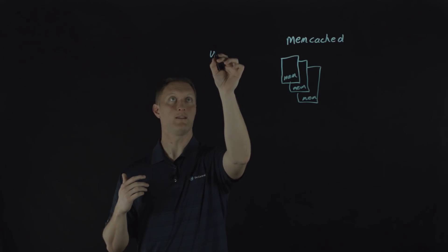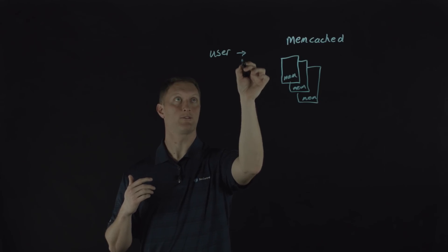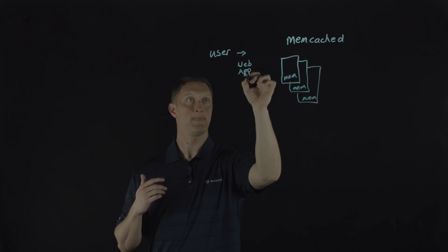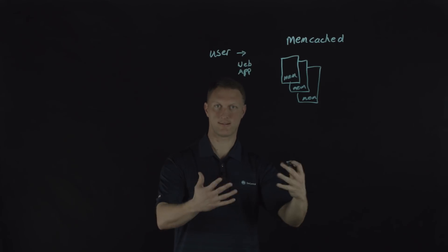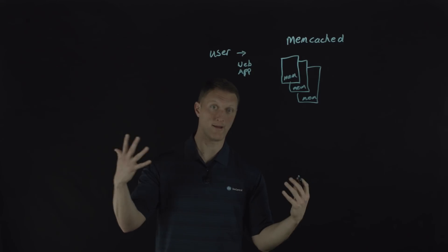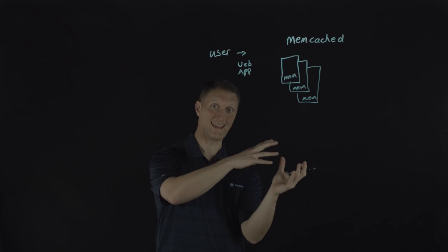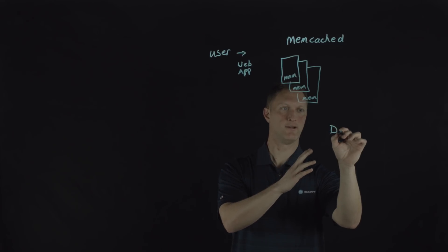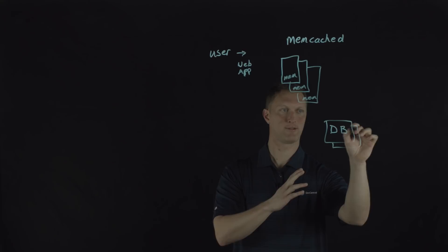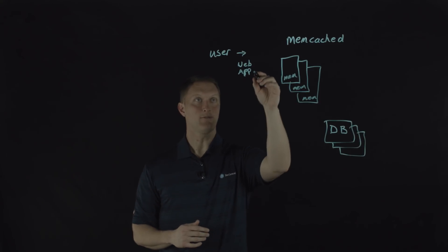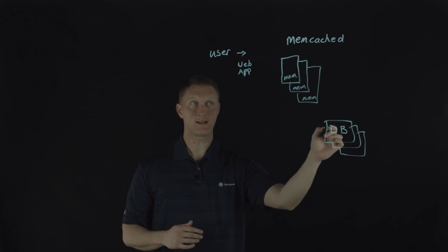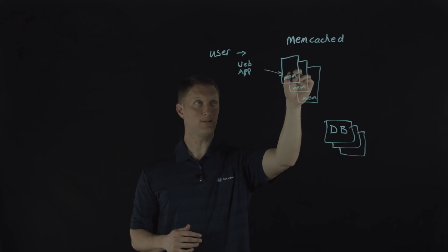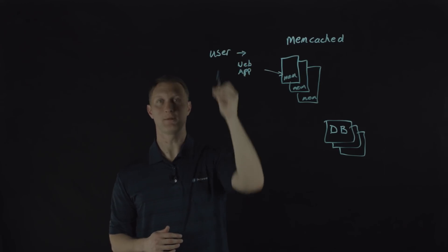If a user sends a request to your web application and asks for the latest update on something, the data probably resides somewhere in a database. Instead of the web server querying the database directly, the web server is going to ask the Memcached server, 'Do you have the data?' If the Memcached server has the data, it responds, and then the web application presents that to the user.